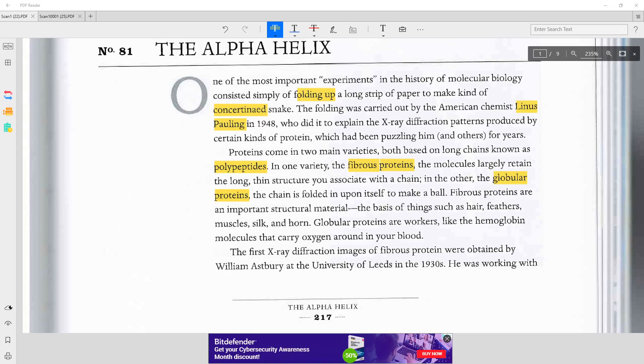Fibrous proteins are an important structural material, the basis of things such as hair, feathers, muscles, silk, and horn.